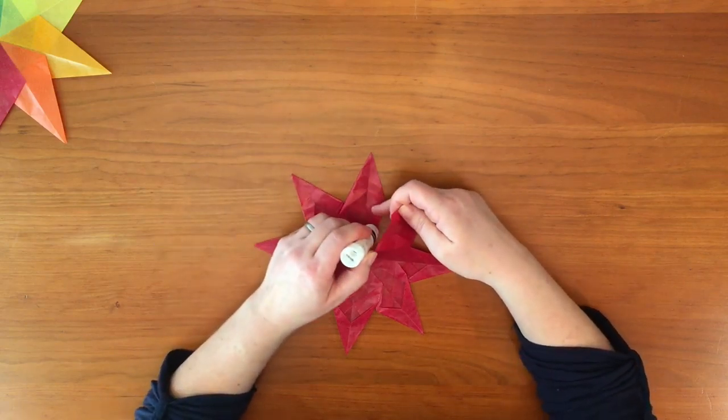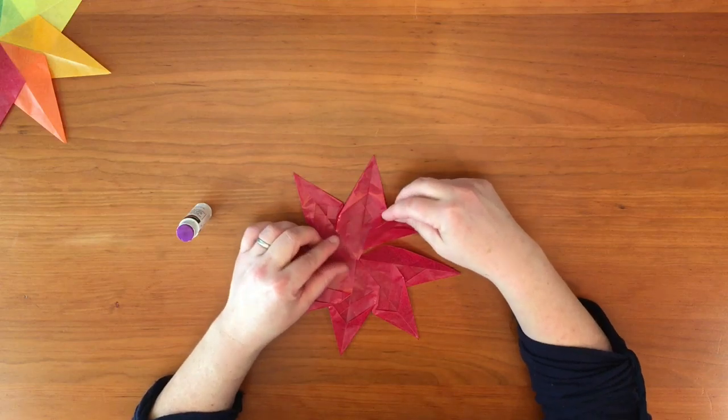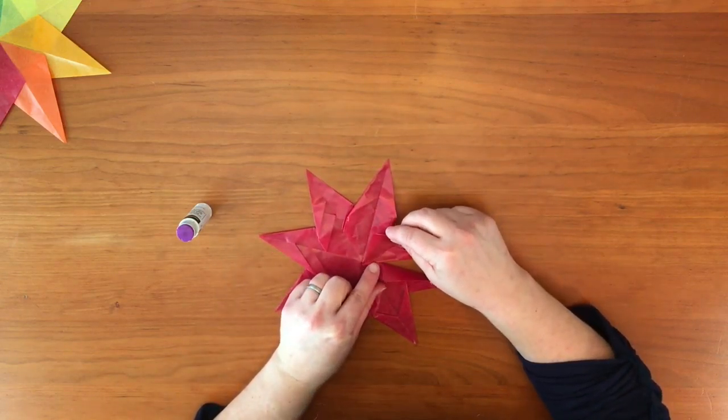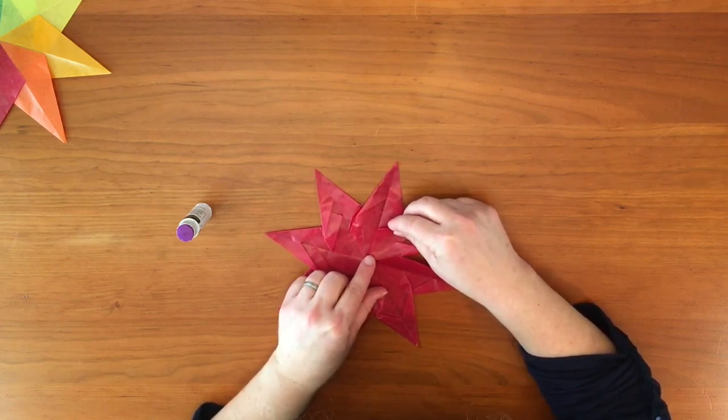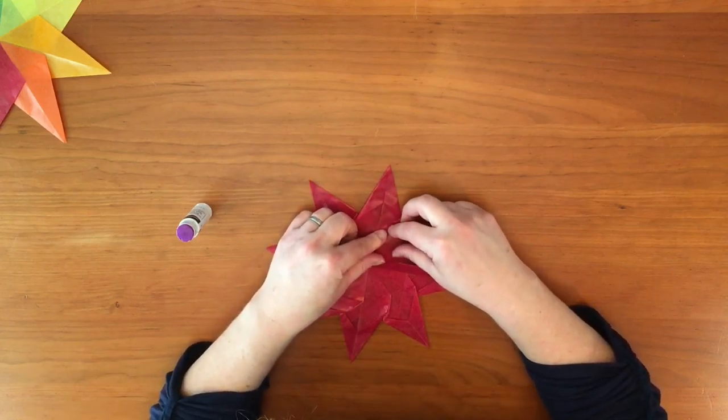For the last point, I'm going to add a little glue here to this part of the star. Then I'm going to nestle it in again, making sure that this edge lines up with the center line of the bottom star and the points line up.